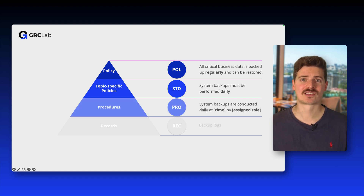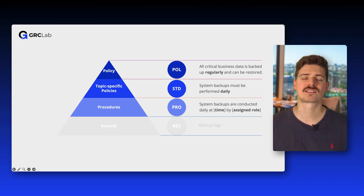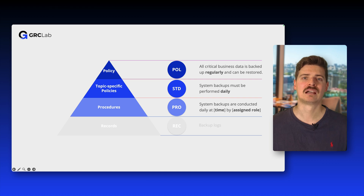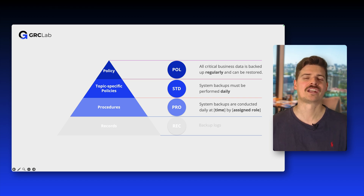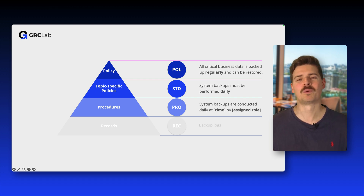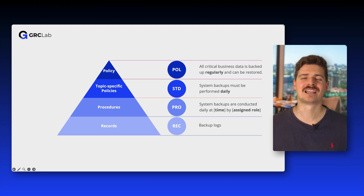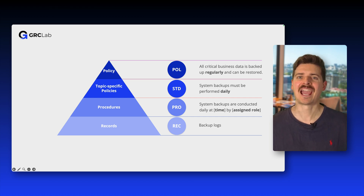While policies define the intent and standards establish the specific rules, procedures provide the detailed step-by-step instructions on how to carry out the requirements in practice. They ensure that employees follow a consistent process when performing critical tasks like backups. Using our backup example, a backup procedure would provide clear instructions for IT staff on how to execute backups correctly — typically a PDF or a documentation page with plenty of screenshots outlining where to click, which options to select, and where to store your data. The final layer of the documentation pyramid is records. Records serve as evidence that a process has been carried out as required by the standard and policy, providing proof of compliance, accountability, and traceability.